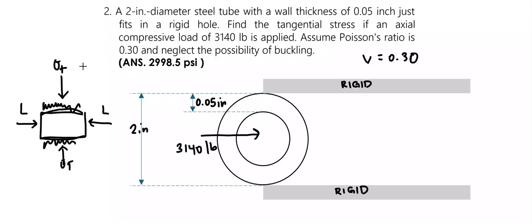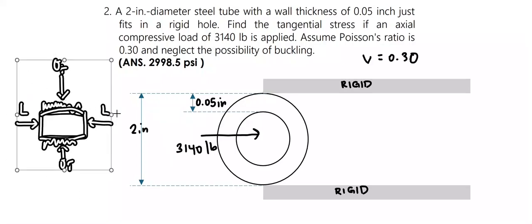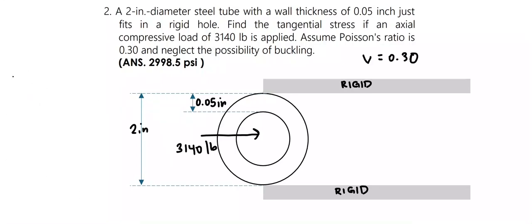First, we need to solve for the longitudinal stress, which equals the force of 3,140 pounds divided by the area of the steel tube. This can be approximated as the perimeter times the wall thickness: π times 2 inches times 0.05 inches.